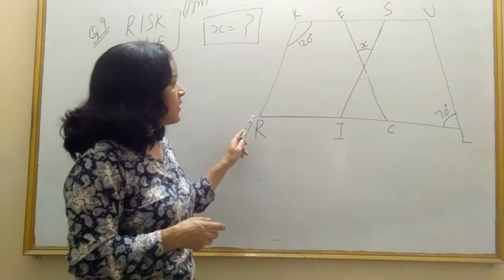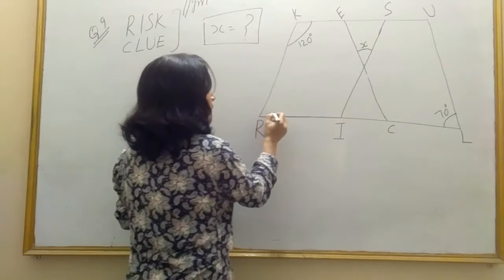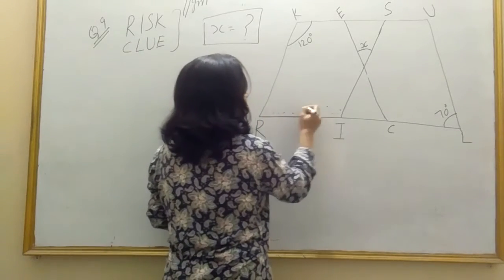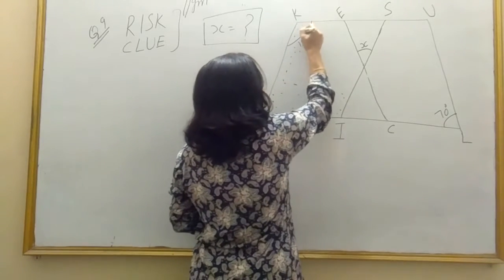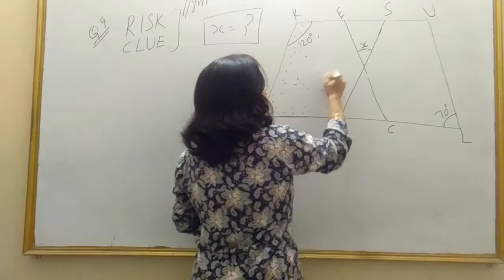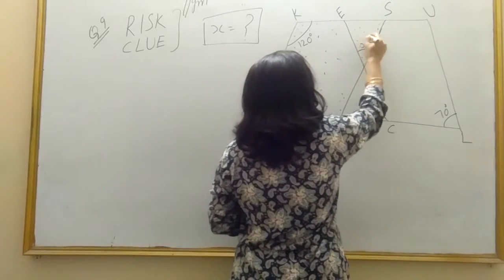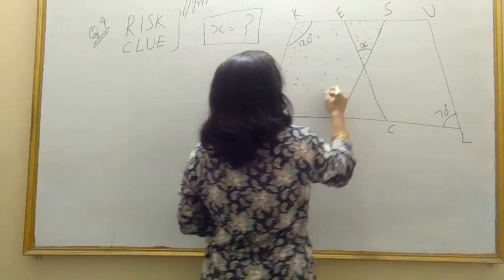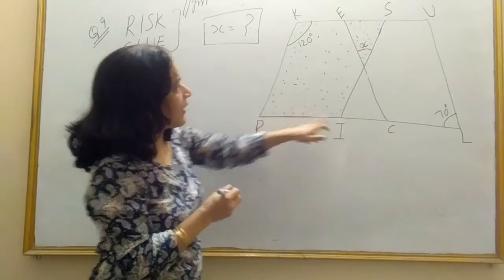One parallelogram is R-I-S-K, let me make you clear the figure, this one. One parallelogram is this, only I take the region inside R-I-S-K. Dotted region inside R-I-S-K.